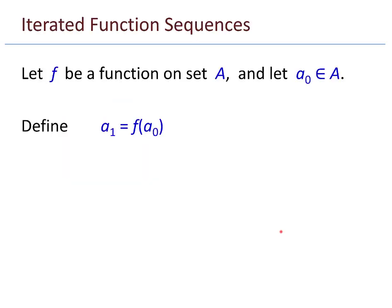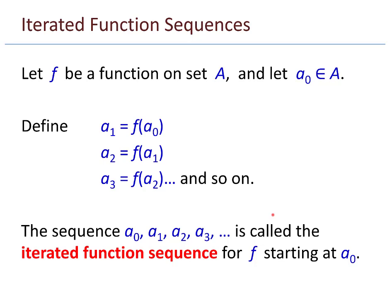Let's make this idea a little bit more mathematical. Let f be a function on a set a, and let a sub 0 be an element of a. Define a 1 as the function applied to a 0. Then define a 2 as the function applied to a 1, and then a 3 as the function applied to a 2, and so on. This is an iterative process. The sequence a 0, a 1, a 2, a 3, on and on, is called the iterated function sequence for f starting at a 0.